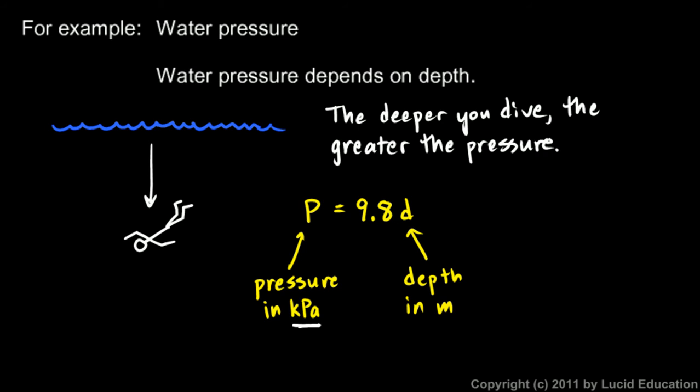If you're measuring your pressure in kilopascals and your depth in meters, then this is the equation. You could have other units for pressure or depth like feet or fathoms, and if you had different units you would have a different number there. But with these units, that's the constant: 9.8.